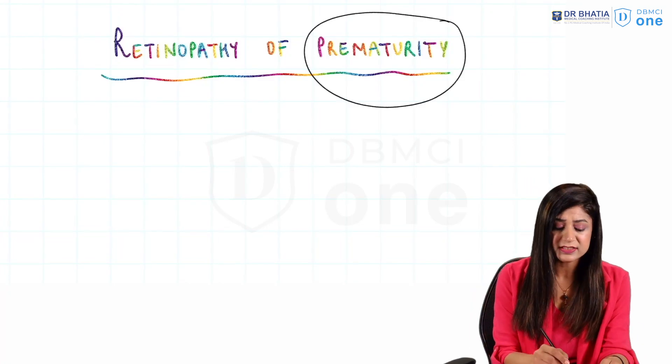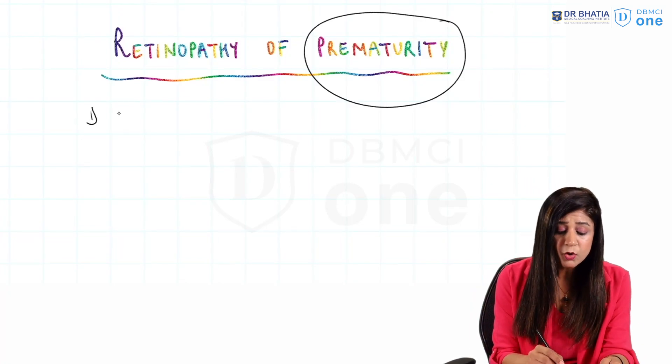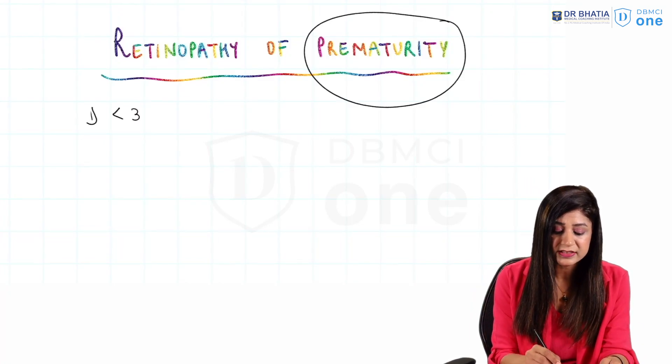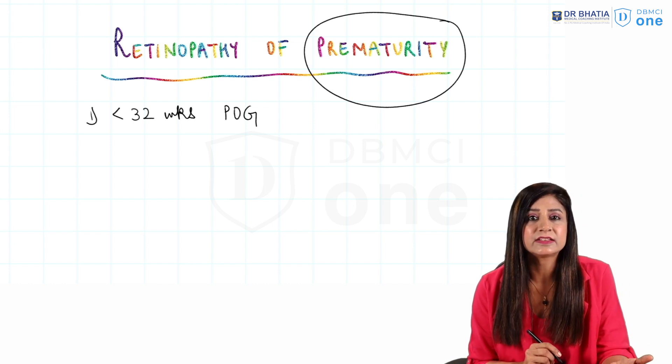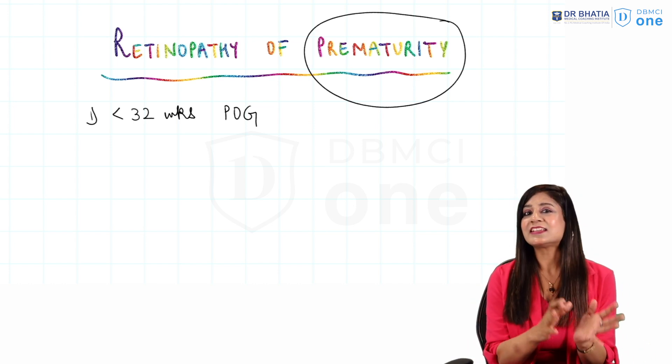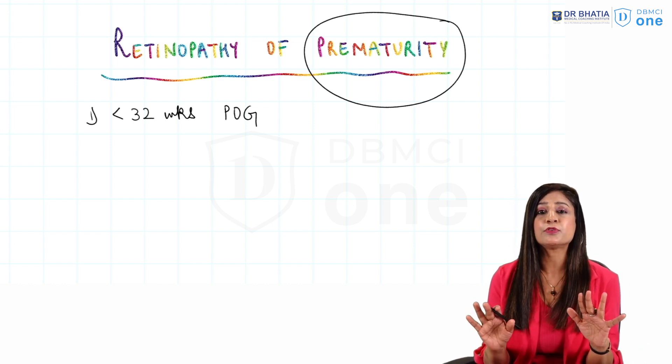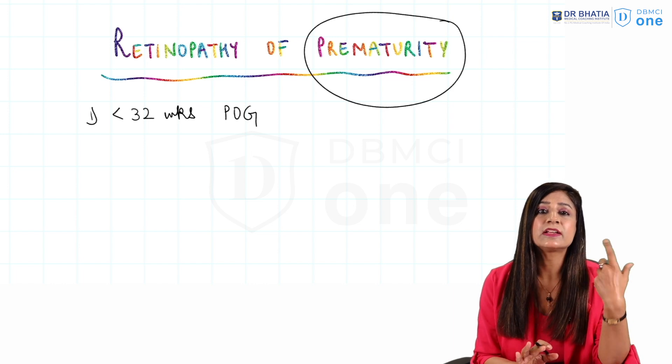Retinopathy of prematurity is a disease of premature babies. If you look at the risk factors, number one will be all the babies who are born less than 32 weeks period of gestation. Now sometimes you will see they are writing less than 30 weeks, so obviously less than 30 is less than 32 only. Don't get confused according to the oldest classification.